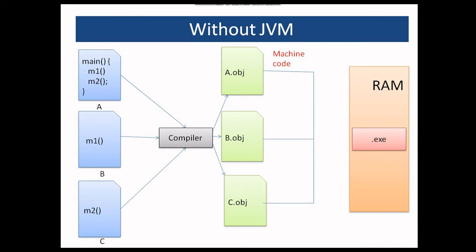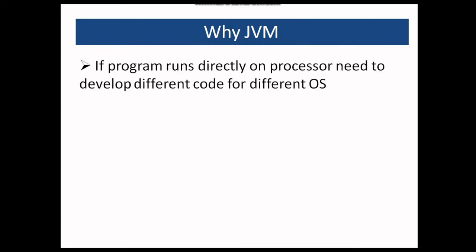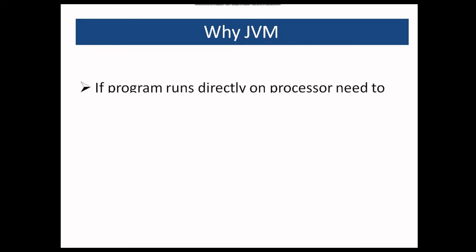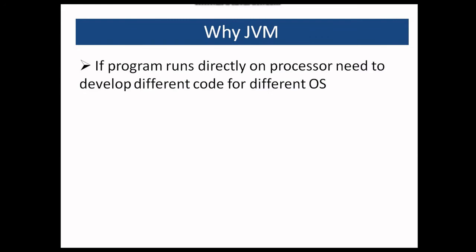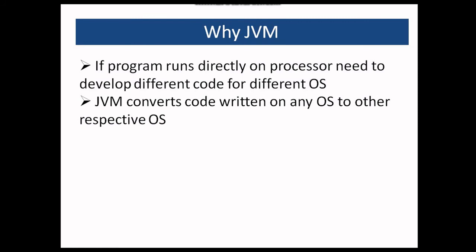Then why does JVM come into picture? If the program runs directly on the processor, they would have to be developed separately for separate OS. Code developed on Windows will only run on Windows machine and would have to be developed separately for the Linux machine. But if you have JVM, code written on Windows can run on Linux as well, because JVM converts it to the respective OS format. That is the reason Java is platform independent.